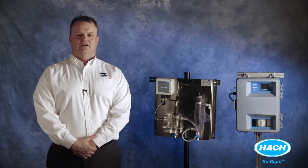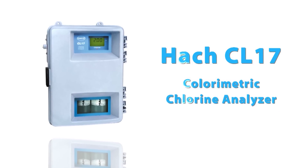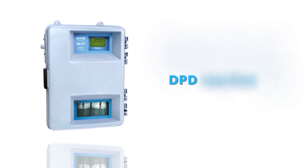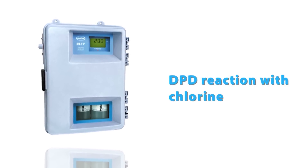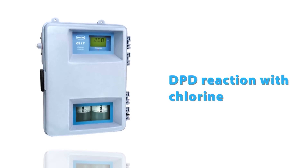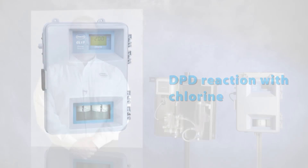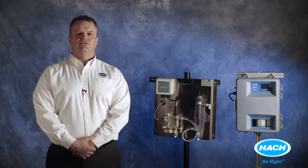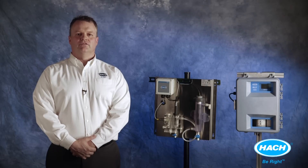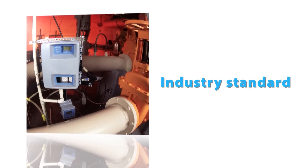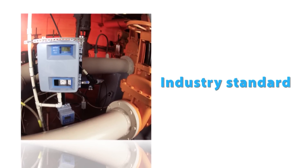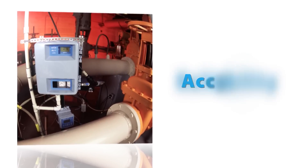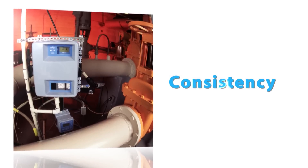In addition to the CL10, HAWC also offers the CL17, which is a colorimetric chlorine analyzer. This technology uses a detection method based on DPD reaction with chlorine, which forms a magenta color with intensity proportional to the chlorine concentration. The DPD method has been approved by the US EPA for online analysis of chlorine residual for over 30 years. It is the most widely used and trusted chlorine reference method in the world. The HAWC CL17 is the industry standard in colorimetric chlorine analysis and is well known for its accuracy, reliability, and consistency with lab and field methods.